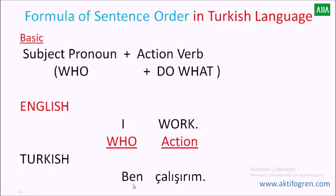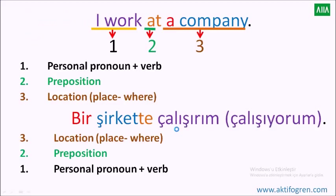Ben çalışırım in English means 'I work.' As you see here, 'ben' — the subject pronoun — comes first. After that the action verb comes. So okay, in English it's the same way. This is the simple part. But let's get to the next part: how we make sentences in Turkish. Let's look at: 'I work at a company.' As you see here, 'at' is a preposition, 'a' is the article, and 'company' is the noun form.